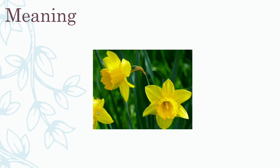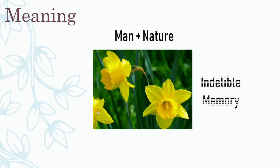Now let's take a look at the meaning or message conveyed by this poem. Wordsworth elaborates on the connection between man and nature, showing that the speaker is overcome with joy whenever he sees the daffodils. This suggests that the natural world is able to evoke strong emotions such as awe, which is a universal human experience. This is also an indelible — or unforgettable — memory for the speaker. Even when he's just sitting on his couch, he's transported back to that moment of seeing the daffodils.